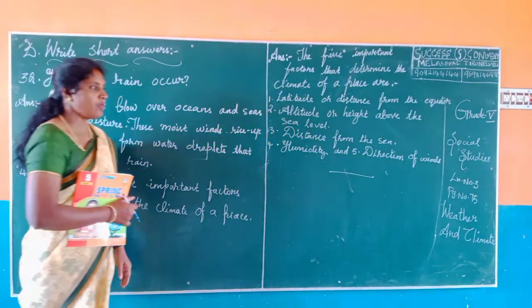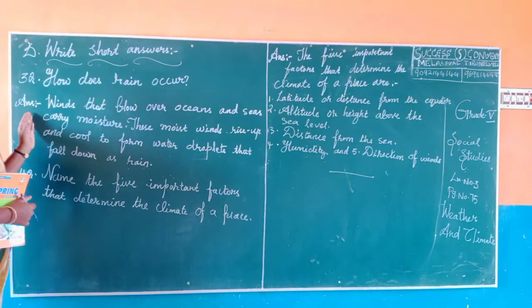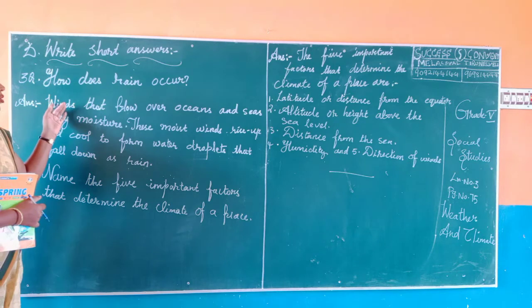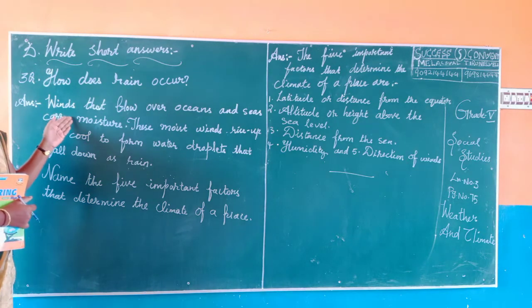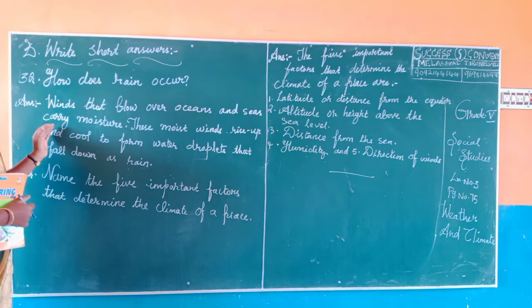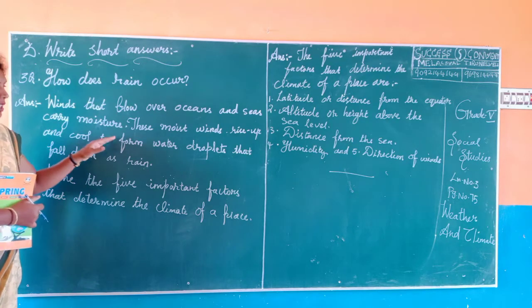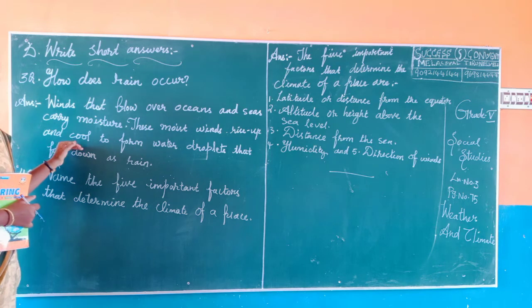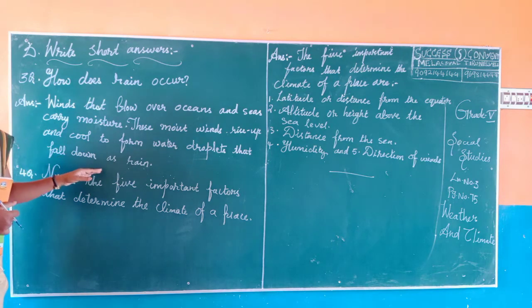Book pack page number 75, D column, write short answer. Question number 3: How does rainfall occur? Winds that blow over oceans and seas carry moisture. These moist winds rise up and cool to form water droplets that fall down as rain.